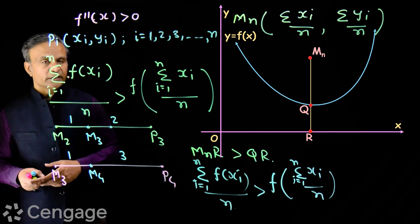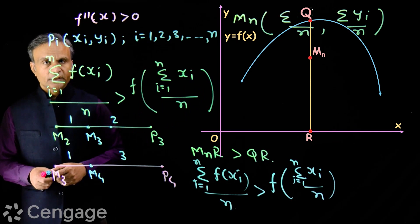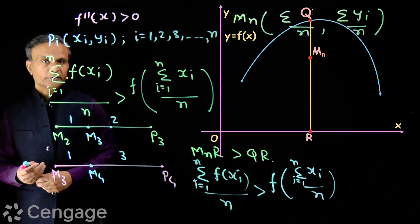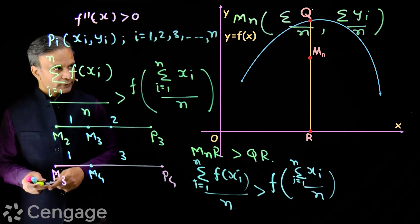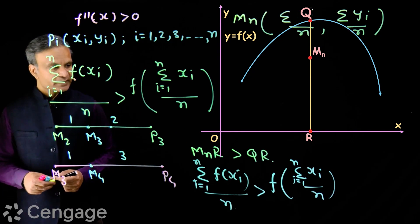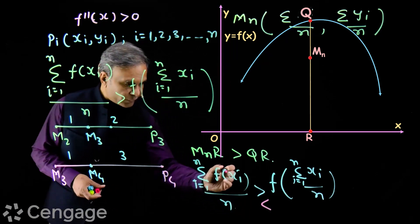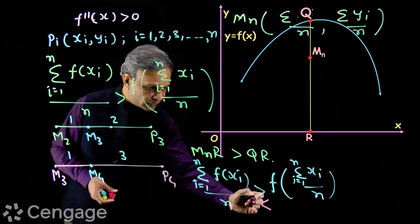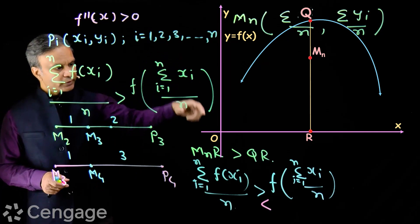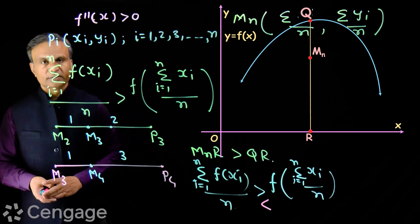Then what will be the inequality when the graph of the function is concave downward? If the function's graph opens to the bottom, then MnR will be less than QR. So we will have Σf(xi)/n less than f(Σxi/n). If it is concave downward then this will be the inequality, and if it is concave upward then the other inequality holds.